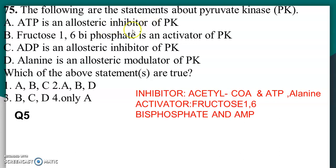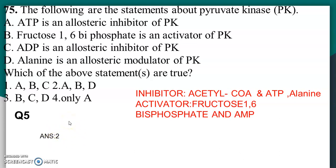A — ATP is an allosteric inhibitor of pyruvate kinase — is correct. B is also correct. C states ADP is an allosteric inhibitor of pyruvate kinase — no, ADP is not an allosteric inhibitor of pyruvate kinase, so C is wrong. D — alanine is an allosteric modulator of pyruvate kinase — yes. So option two is the correct answer.